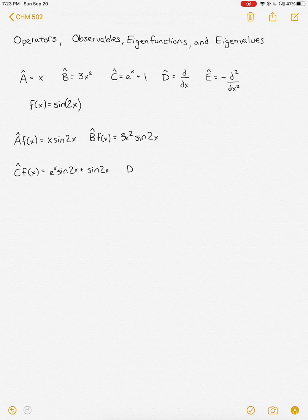Operators can also be derivatives or integrals. If our operator D is a derivative, we take the derivative of our function sine of 2x, and that will give us 2 cosine of 2x. And finally, we'll have operator E here, which is 2 derivatives multiplied by minus 1. So I'll take 2 derivatives of sine of 2x, which is going to be negative 4 sine of 2x, and then that's negative because of our operator E. So our final answer will be 4 sine of 2x.